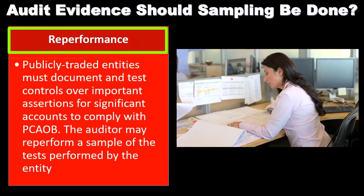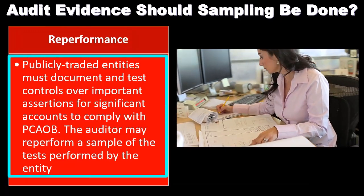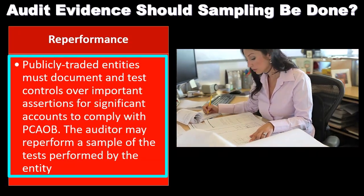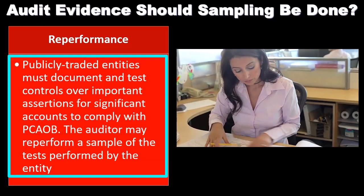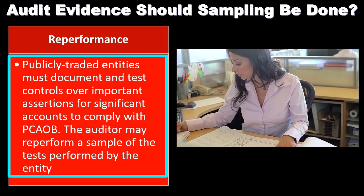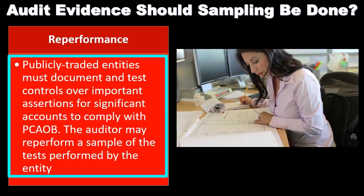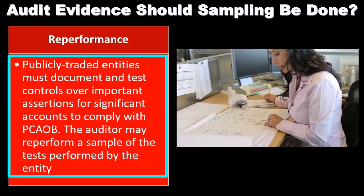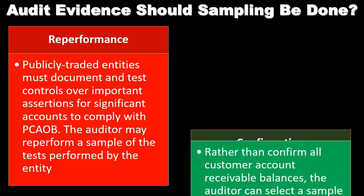Reperformance. Publicly traded entities must document and test controls over important assertions for significant accounts to comply with PCAOB. The auditor may re-perform a sample of the tests performed by the entity. In other words, the auditor will look at the control procedures that are in place and basically re-perform or reenact those control procedures that are listed.